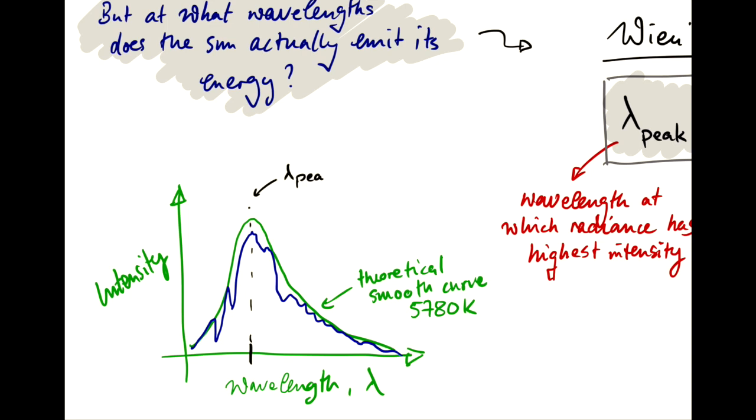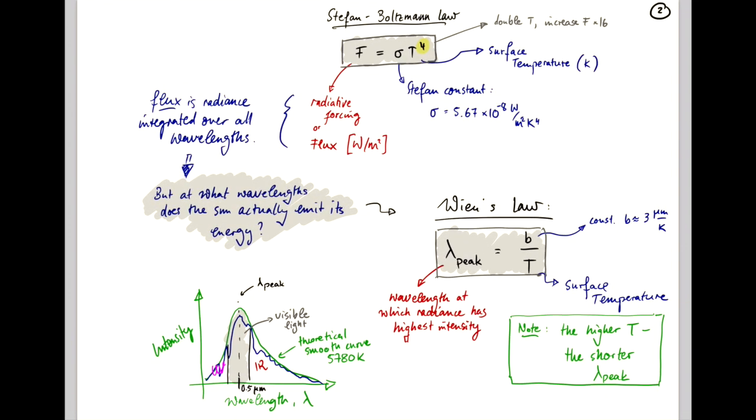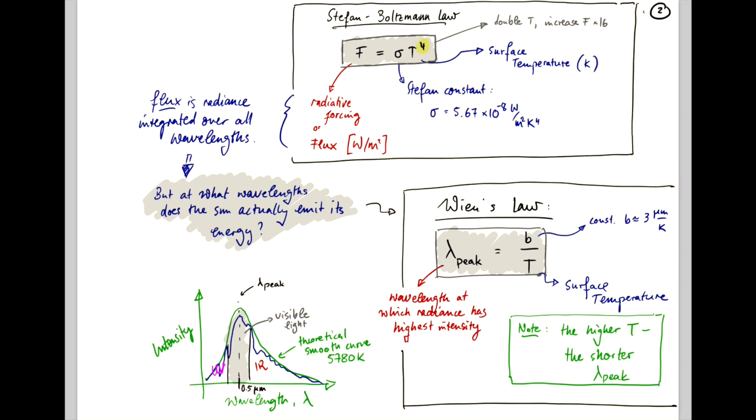Now, the peak wavelength of the Sun spectrum is at about half a micrometer. And that is exactly the yellow intense color that we see when we look at the Sun. So, the visible light is a substantial fraction of energy that the Sun puts out. And to its right in the longer wavelengths, we have the infrared radiation and to its left, we have the UV radiation. And this concludes our short introduction to the Stefan-Boltzmann law and Wien's law.